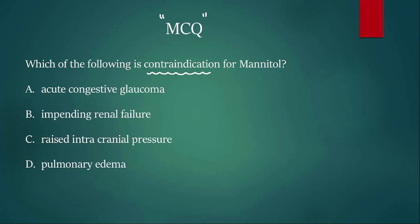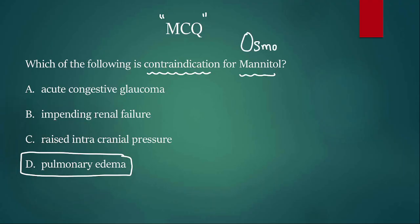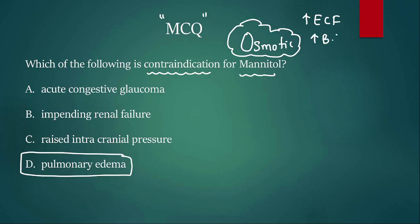If you are saying the answer is D, pulmonary edema, then you are correct. First of all, what is mannitol? Mannitol belongs to the osmotic diuretics. An osmotic diuretic attracts water and keeps water inside the blood vessel, which increases extracellular fluid, increases blood volume, and that increase in blood volume increases workload on the heart. Mannitol is used in acute angle-closure glaucoma — it is the drug of choice.